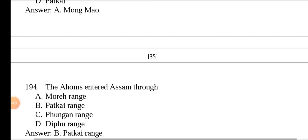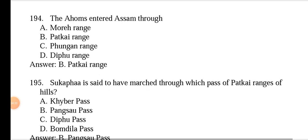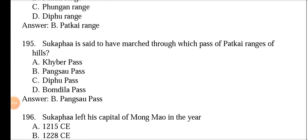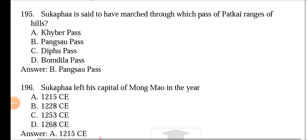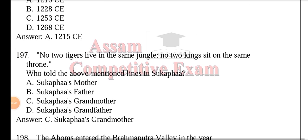The founder of the Ahom kingdom was Sukafa. The Ahoms originally came from Mong Mao. The Ahoms entered Assam through the Patkai range. Sukafa is said to have marched through Pangsau Pass of the Patkai ranges — this is an important fact. Sukafa left his capital of Mong Mao in the year 1215. The famous lines, 'No two tigers live in the same jungle, no two kings sit on the same throne,' were told to Sukafa by his grandmother.